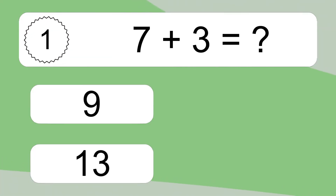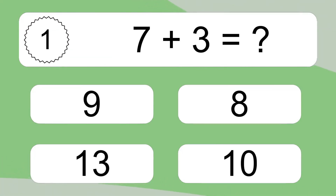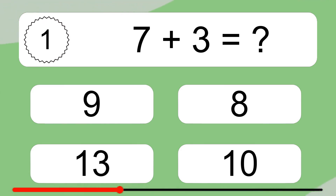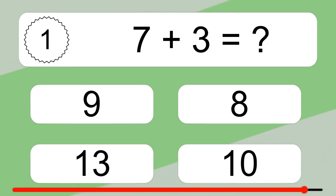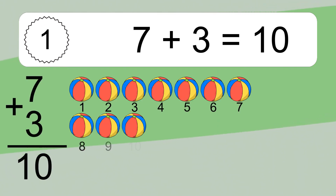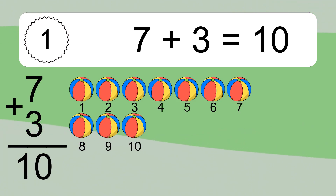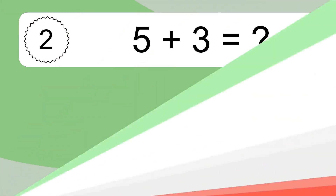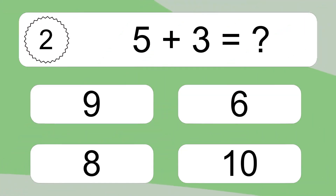7 plus 3 equals what? 7 plus 3 equals 10. Let's count it: 1, 2, 3, 4, 5, 6, 7, 8, 9, 10.